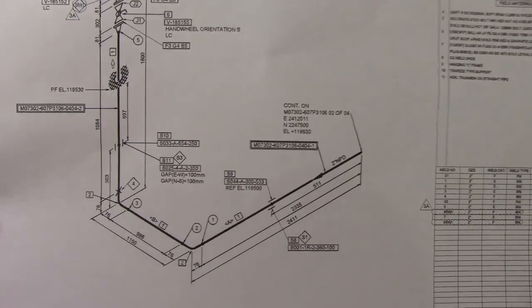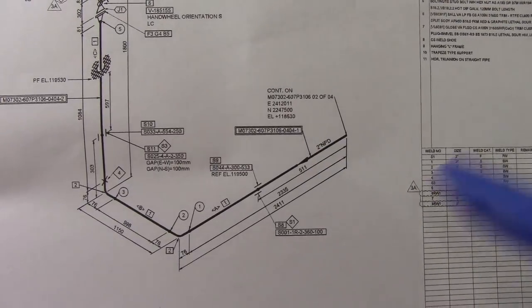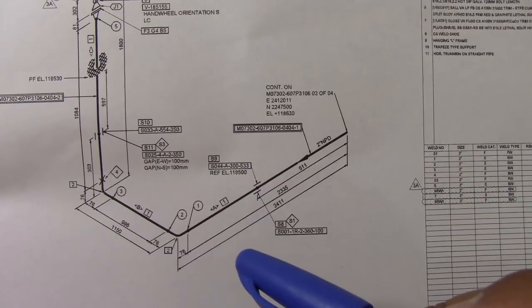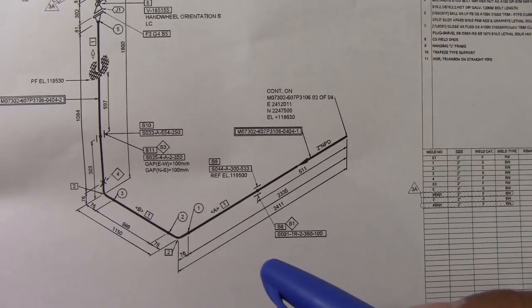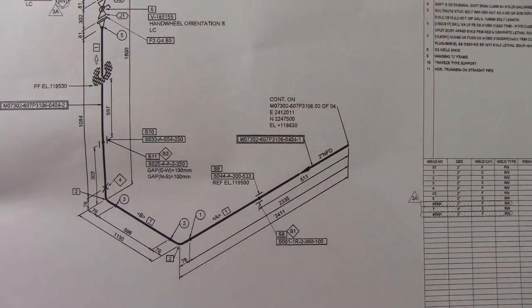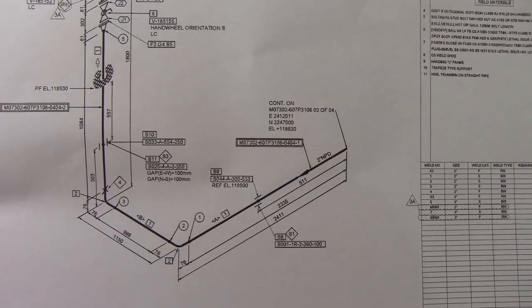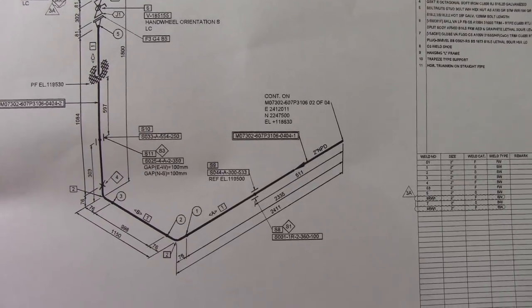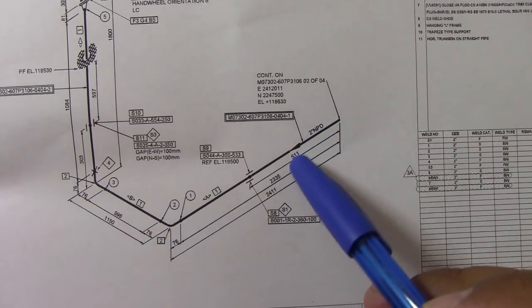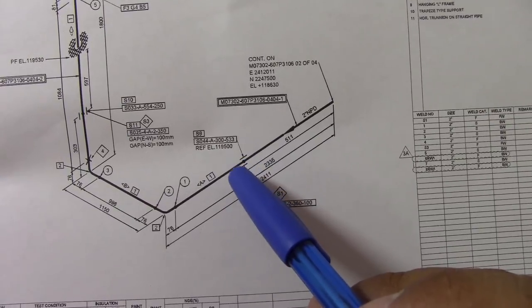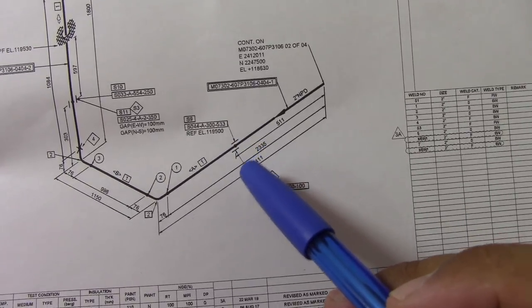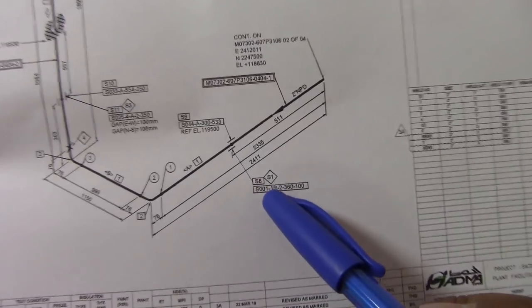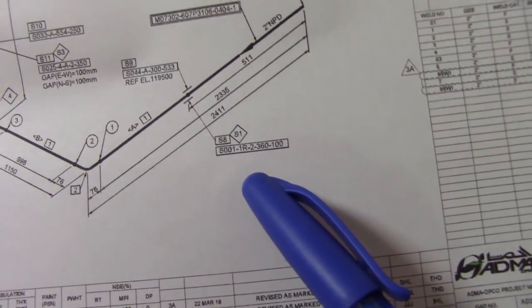This is the isometric drawing. We are on site checking this line for attaching items in the punchlist for the test package. It is important to check this line to see if it is already completed or not. So let's start — this support is not yet installed, so we will check it.